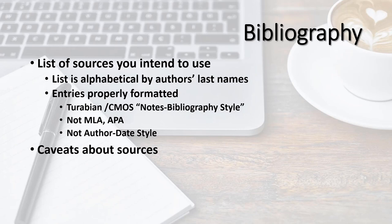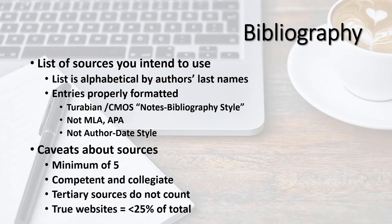Besides citation style, there are a few other caveats about your proposal's sources. You must have a minimum of five, and they have to be competent and collegiate. You can use tertiary or reference sources in your paper, and if you do you must cite them, but they do not count toward the minimum required number of sources. At this point in your research, I suggest you consult secondary source monographs — books and articles that offer an interpretation of your topic or that touch on your topic. I also require you to restrict your inclusion of true websites to one out of four. This means if you include five to seven sources, only one of them can be a true website. To include two true websites, you'll have to increase your bibliography to at least eight total sources.